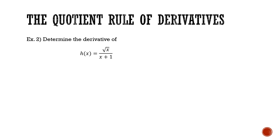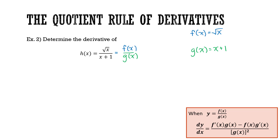Let's reinforce this with one more example. I want to determine the derivative of h of x, which equals the square root of x divided by x plus 1. This is a perfect example of when to use the quotient rule: f of x is the square root of x, and g of x is x plus 1. I'm going to rewrite f of x in exponential form as x to the power of half, so that I can determine f prime of x to apply the quotient rule.